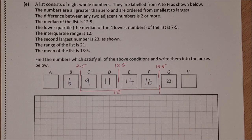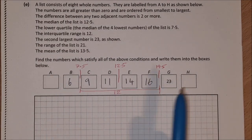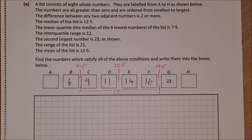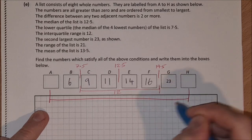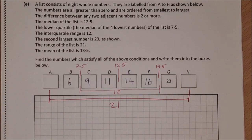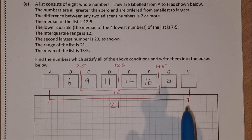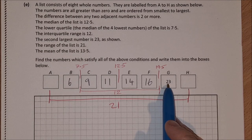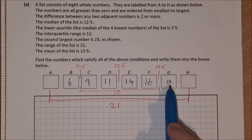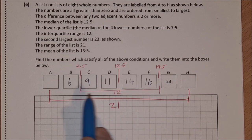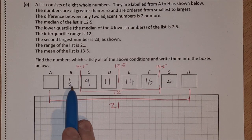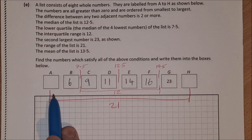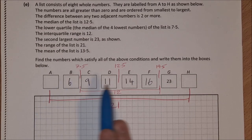And now I just need to find my last two numbers. I know that the range of the list is 21, so the difference between A and H is 21. I know that H needs to be at least 25 because it has to be 2 bigger than 23. A, at most, can be 4 because it has to be 2 lower than 6.